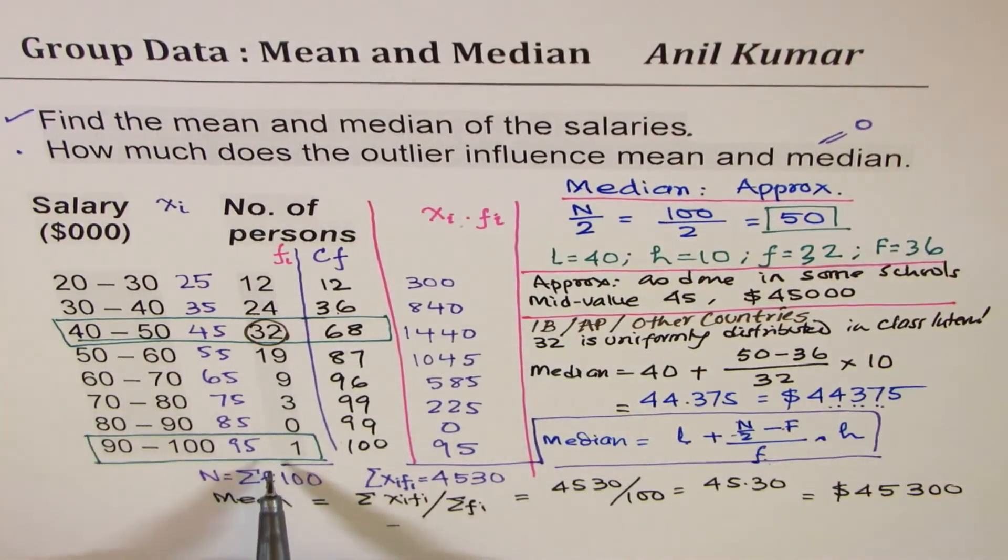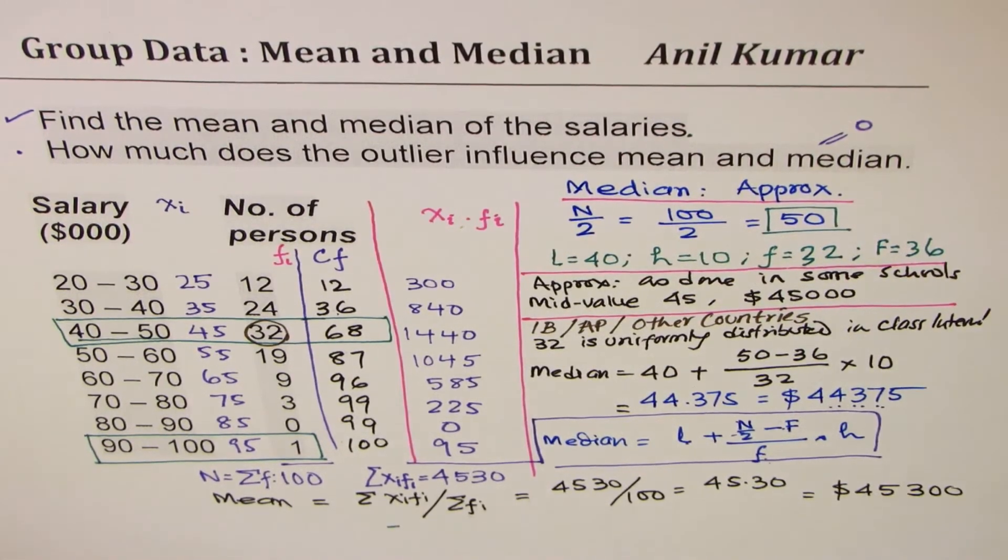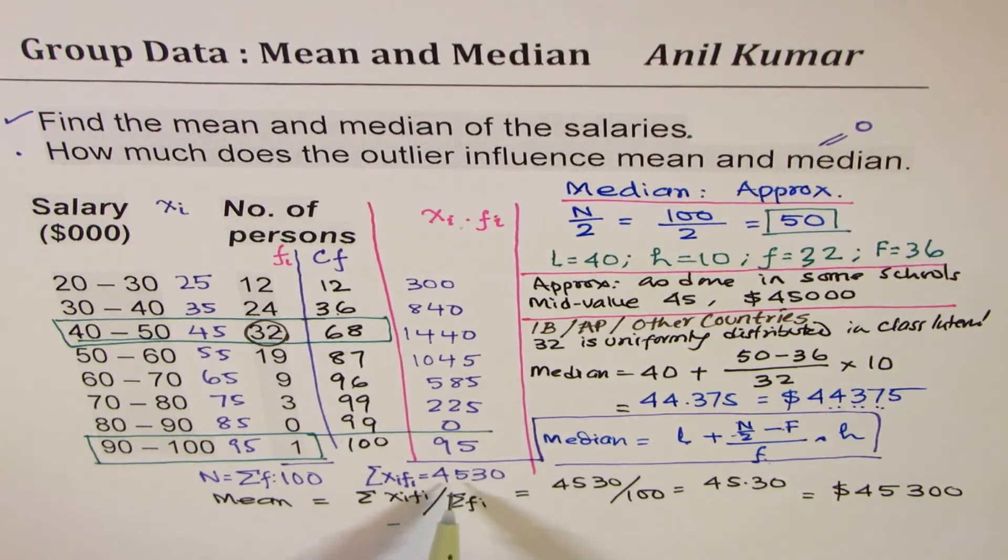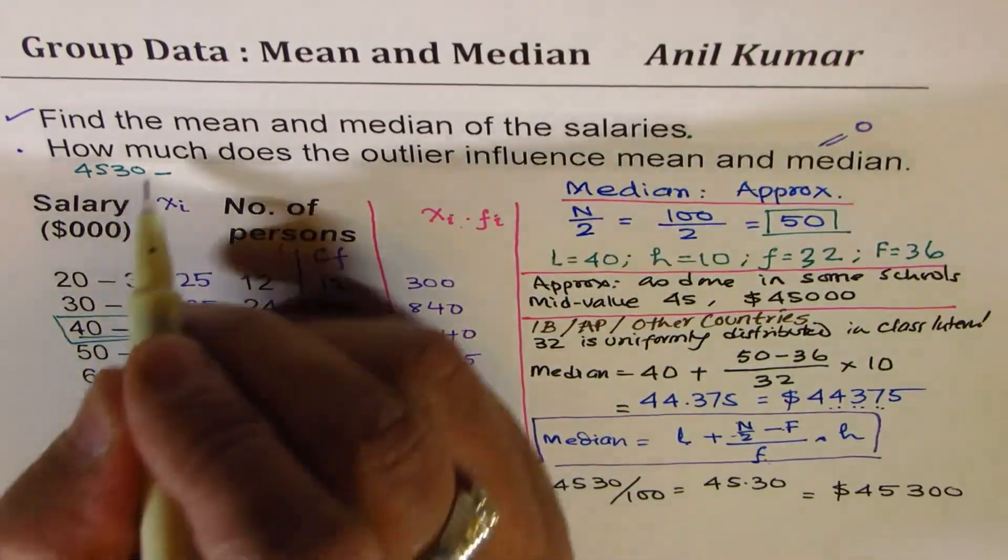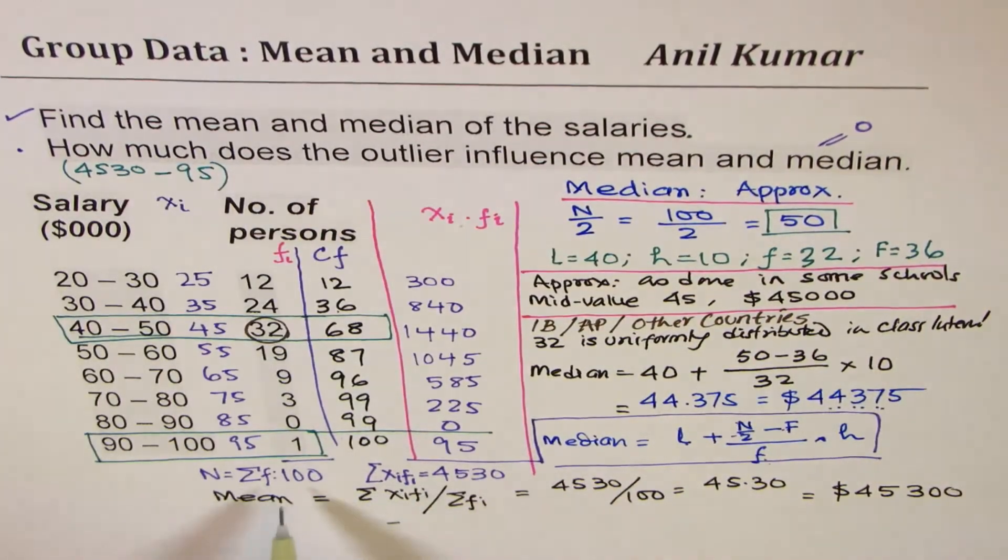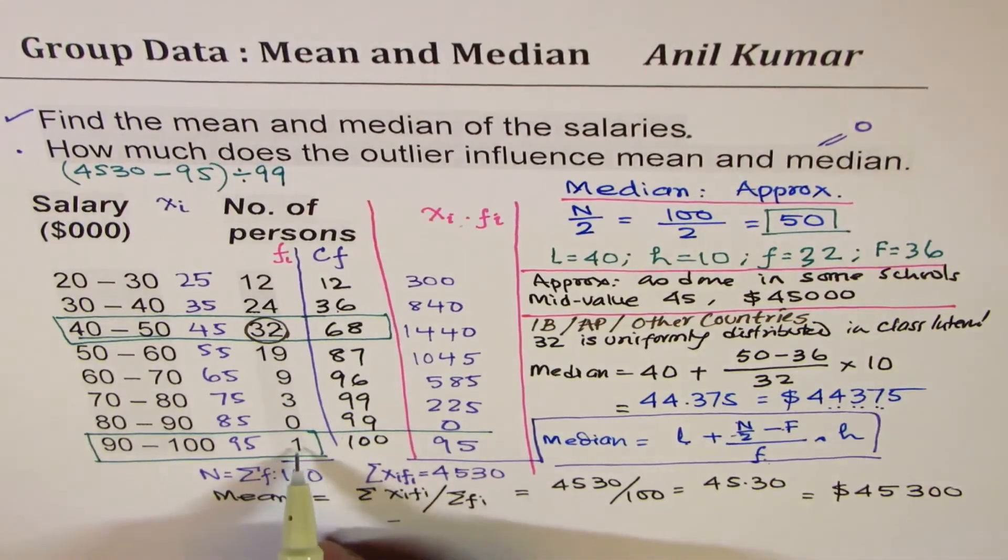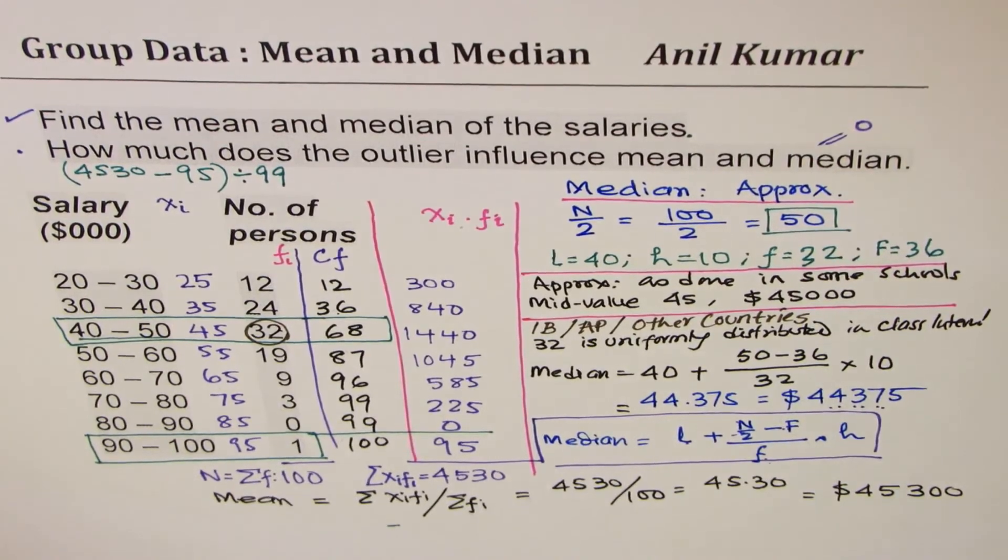However, mean is going to change. Since 95 times 1, this element is going to make a change. How much change will it make? Let's calculate. So what I will do here, since I'm running out of space, I will recalculate. If I take away this 95, then what do I have? I have 4530 take away 95. And then we'll divide by not 100, but we'll divide by 99, since I'm not taking this particular person who is drawing within this range.